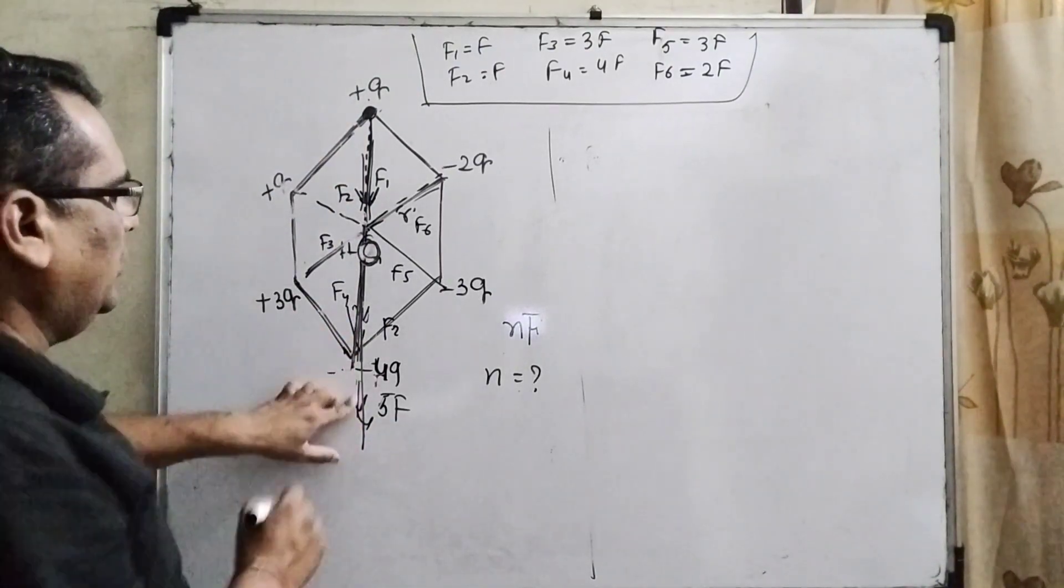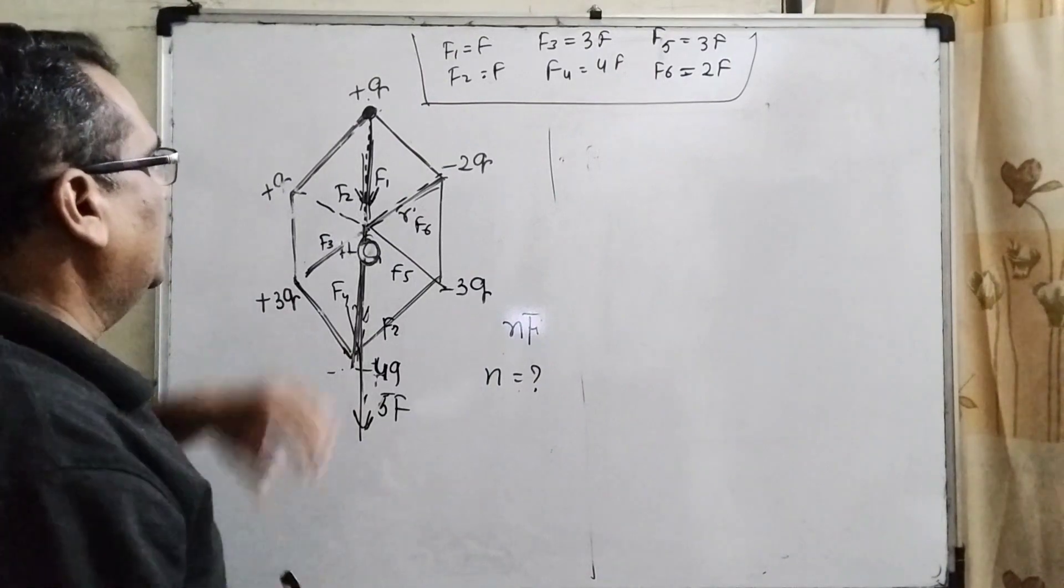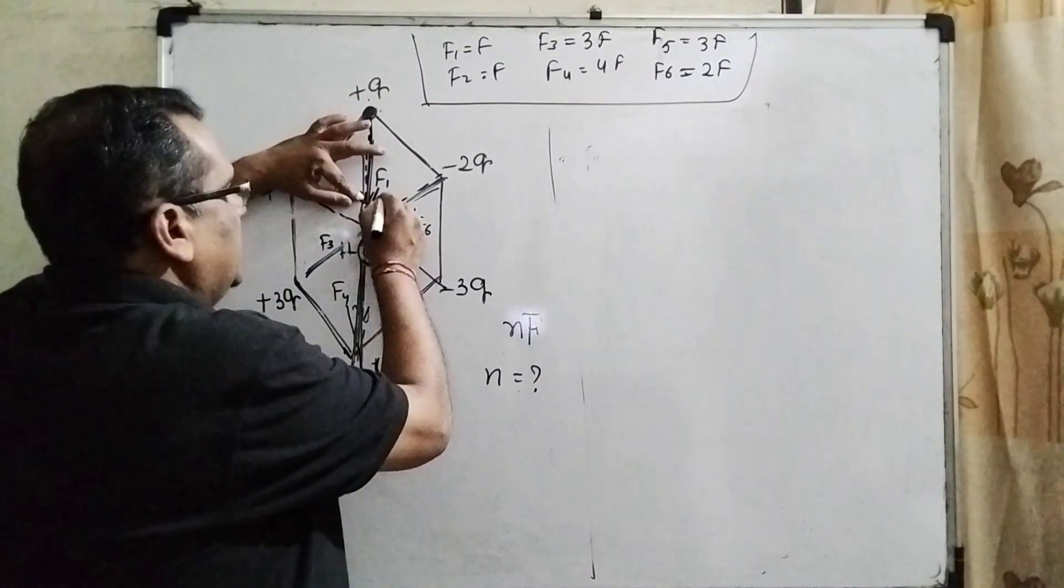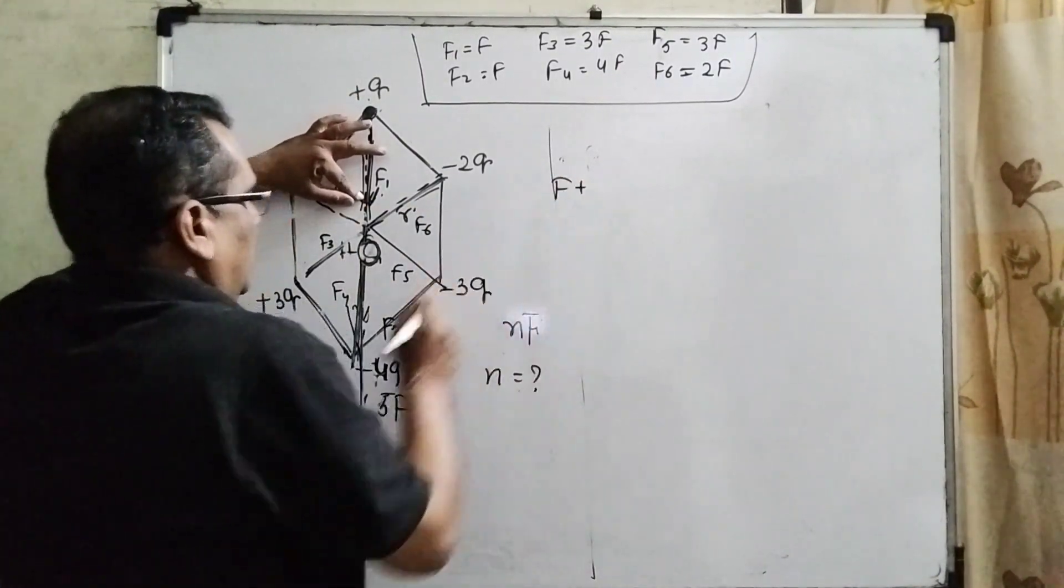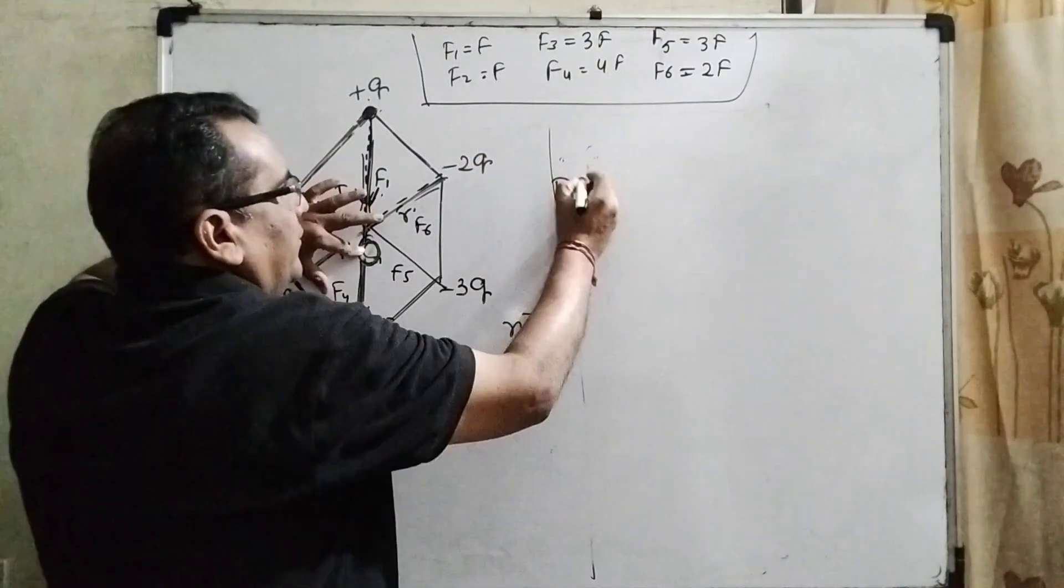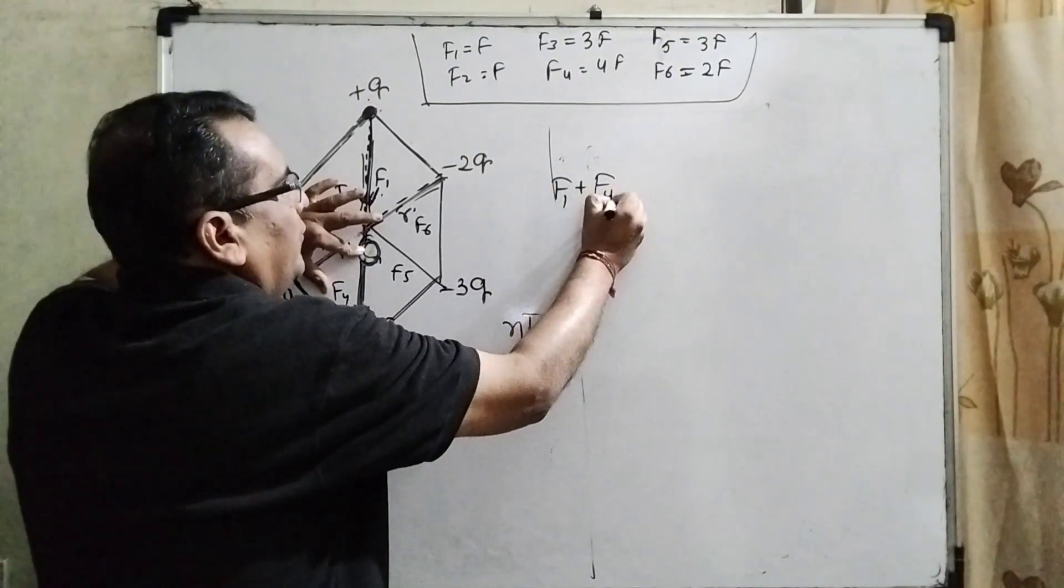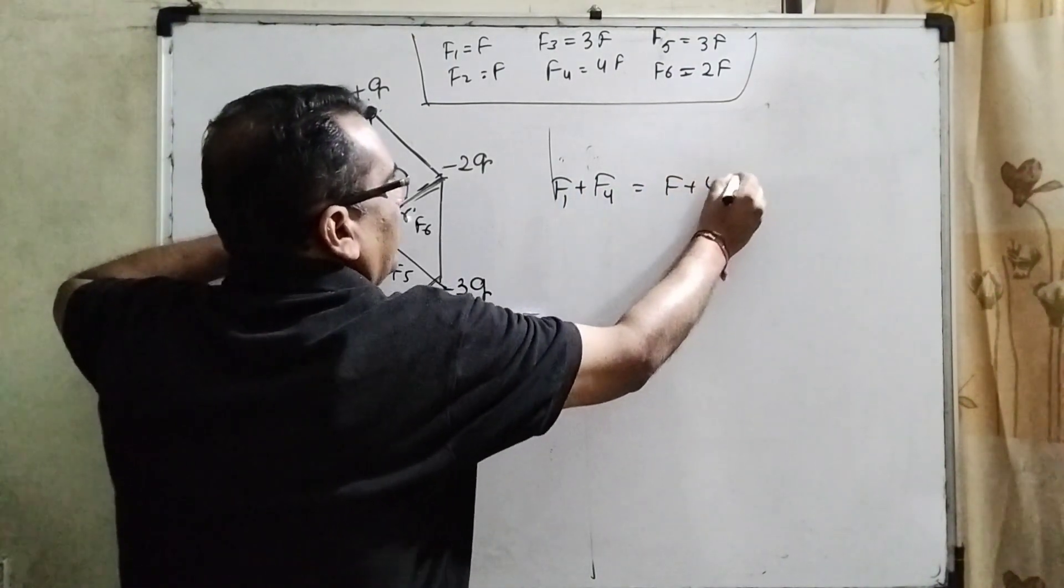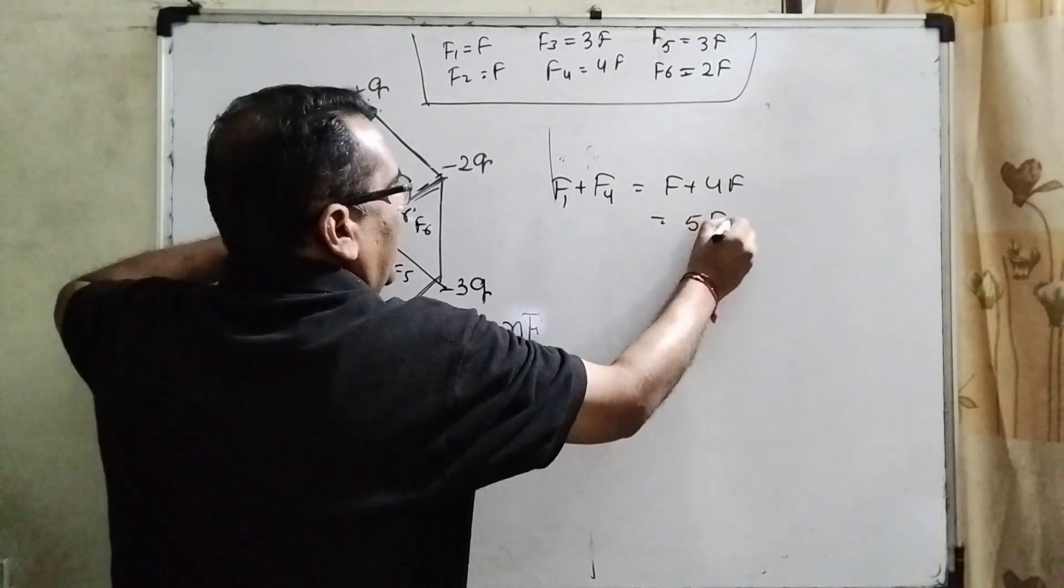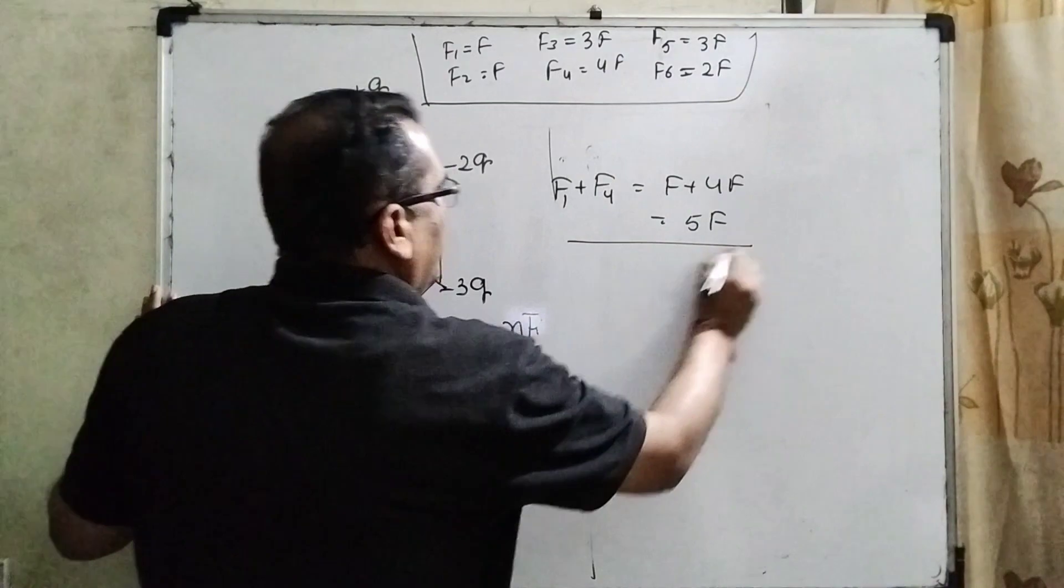It means overall net force is acting downward direction. Then what is the first? This is force F and here is the force F4. F4 is 4F. Means F1 and F4, that is F plus 4F. It means 5F acting downward direction.